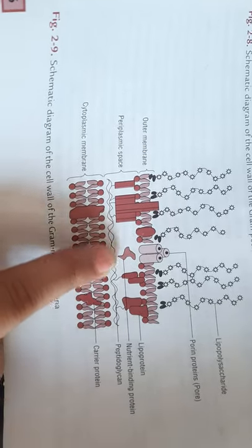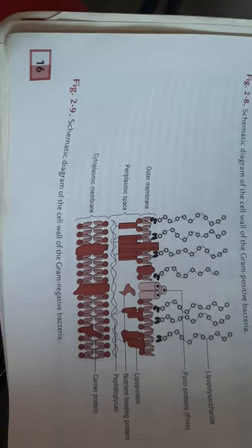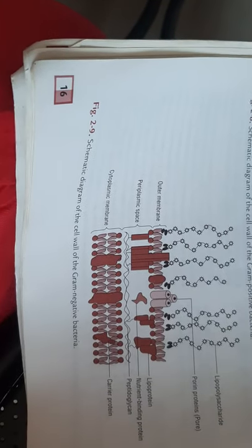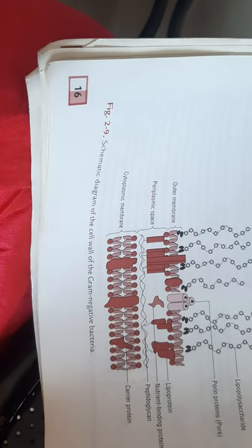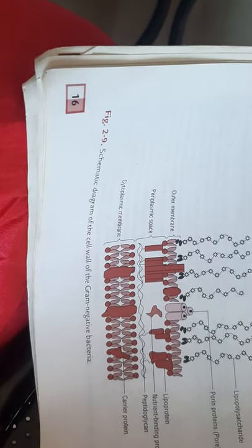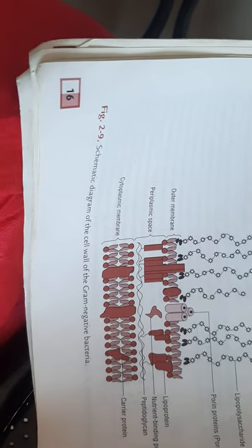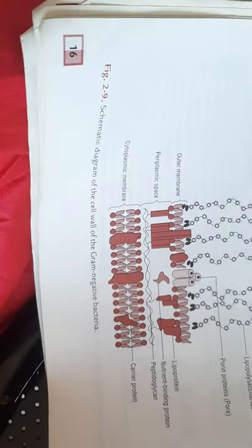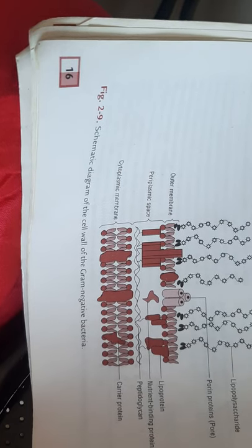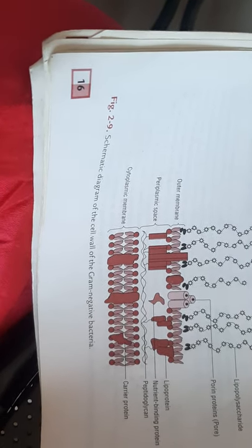The periplasmic space of gram-negative bacteria contains mainly proteins that participate in nutrient acquisition and many hydrolytic enzymes. Beta-lactamase binding protein enzymes that participate in peptidoglycan synthesis are also present. Polymers of D-glucose called membrane-derived oligosaccharides appear to play a role in osmoregulation.